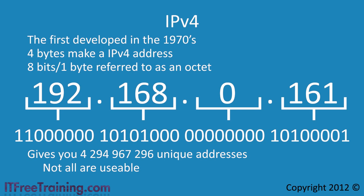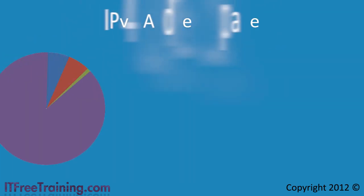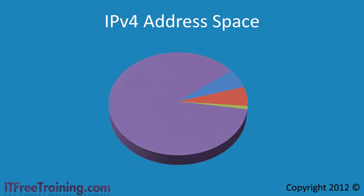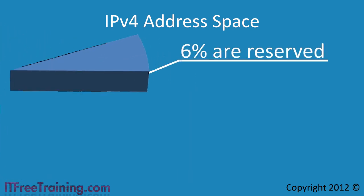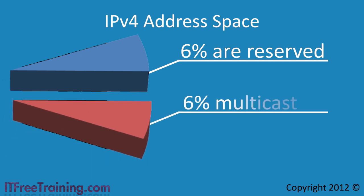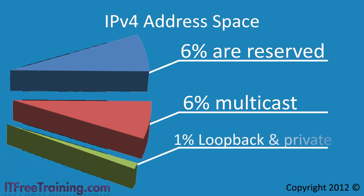This occurs either by design or when addresses are divided up in a process called subnetting. If you look at the IP version 4 address space as a piece of pie, 6 percent is reserved — these may become usable one day but currently are not. Next there are multicast addresses, which take up another 6 percent and perform an important role in IP networks. Lastly, 1 percent is used for loopback and private addresses. This means 87 percent of the address space is allocatable and routable on the internet, or about 13 percent is not available for public use.